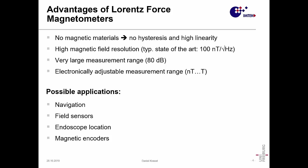You have typically a high magnetic field resolution. State of the art in research is normally around 100 nanotesla per square root hertz. Also, depending on how the sensor is driven, you can have a very large measurement range of over 80 dB. The measurement range is electronically adjustable. With the same sensor system, you can measure fields in the nanotesla range and then probably up to the Tesla range.